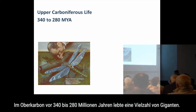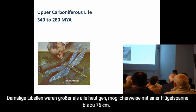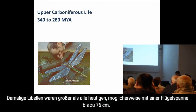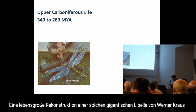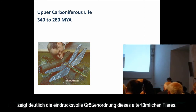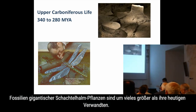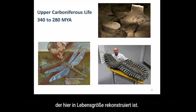In the upper Carboniferous, 340 to 280 million years ago, numerous giants existed. Ancient dragonflies were much larger than any present-day species, possibly up to 76 cm across the wingspan. A life-size reconstruction of a giant dragonfly by Werner Krauss clearly demonstrates the impressive scale of this ancient creature. Fossils of giant horsetail plants are much larger than their present relatives. One of the largest known invertebrates was a giant millipede, reconstructed here as a life-size model.